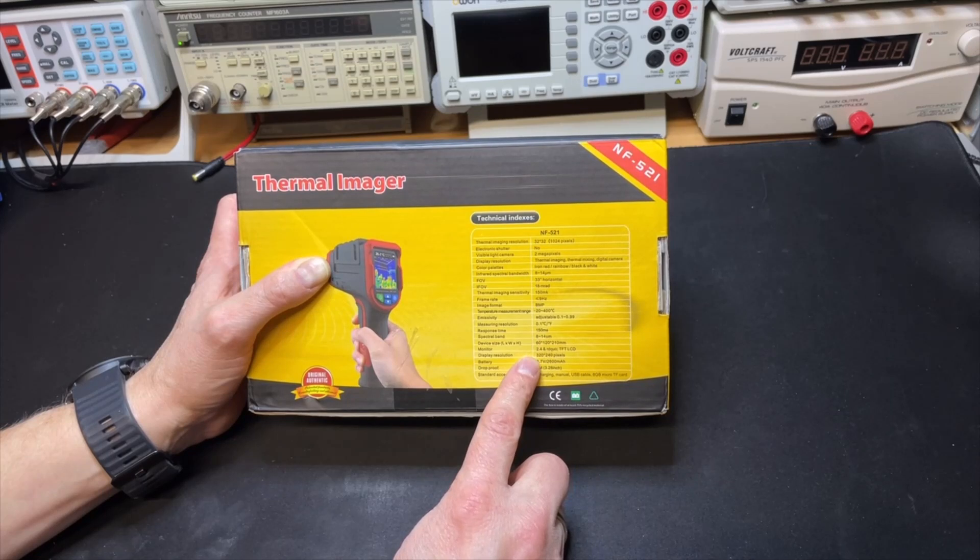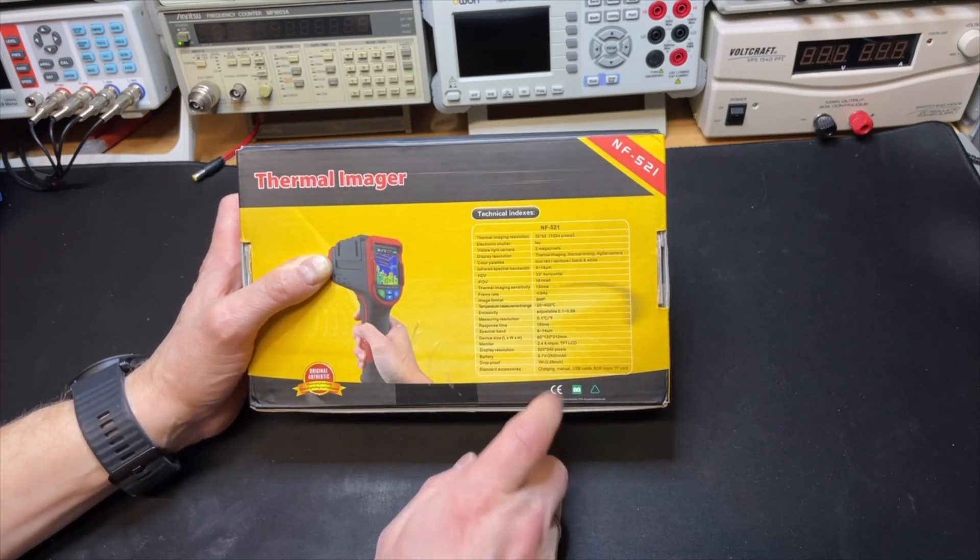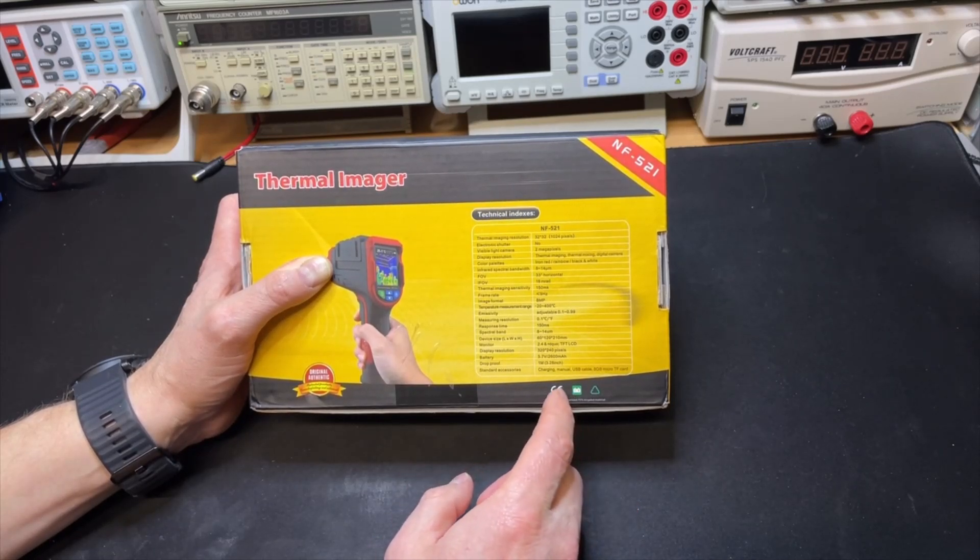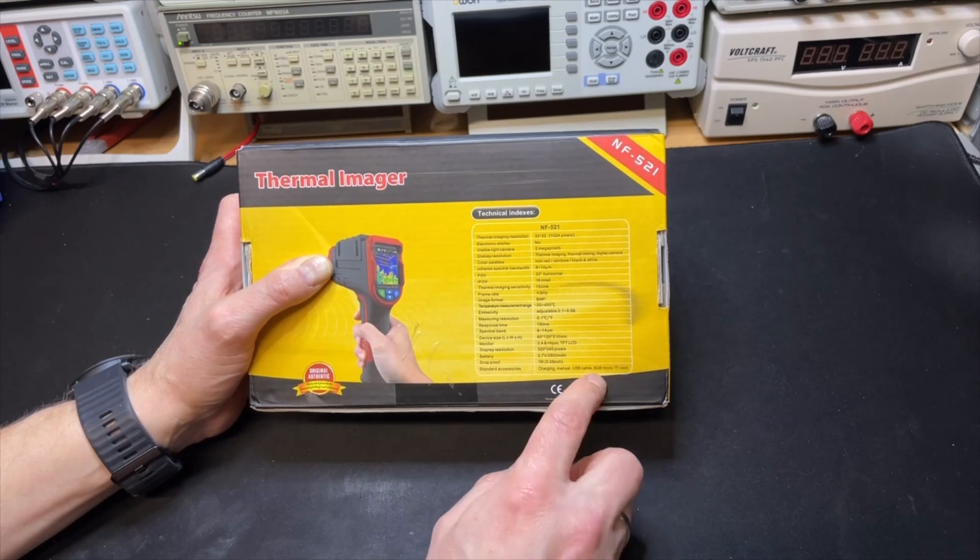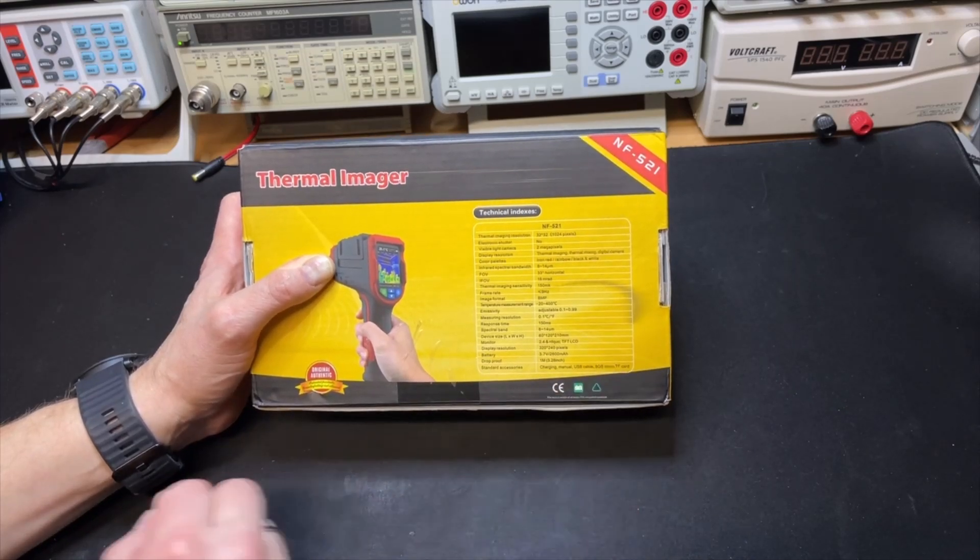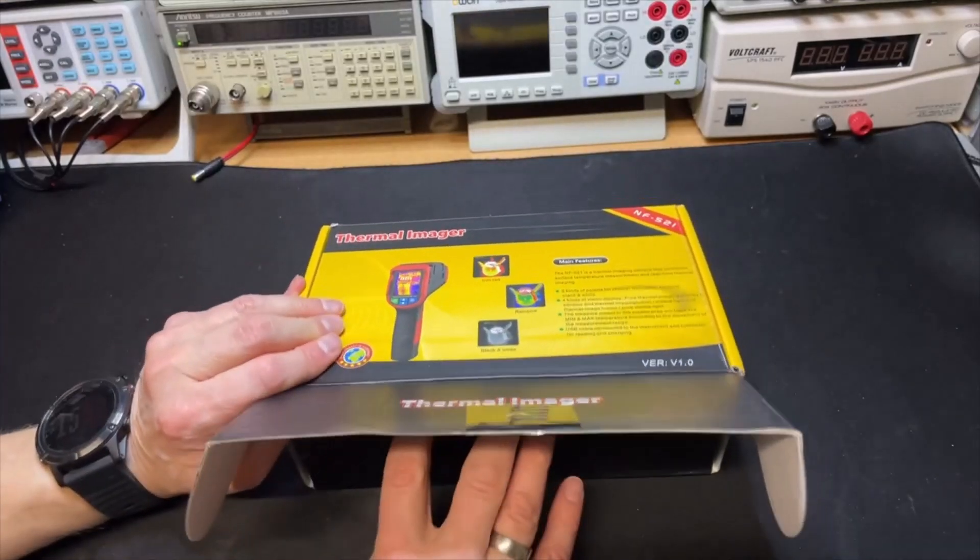You can even change from Celsius to Fahrenheit if you want. The display is 320 by 240, so that is okay. It has a battery and it even has an 8 gigabyte micro card included, so let's see if that is true.